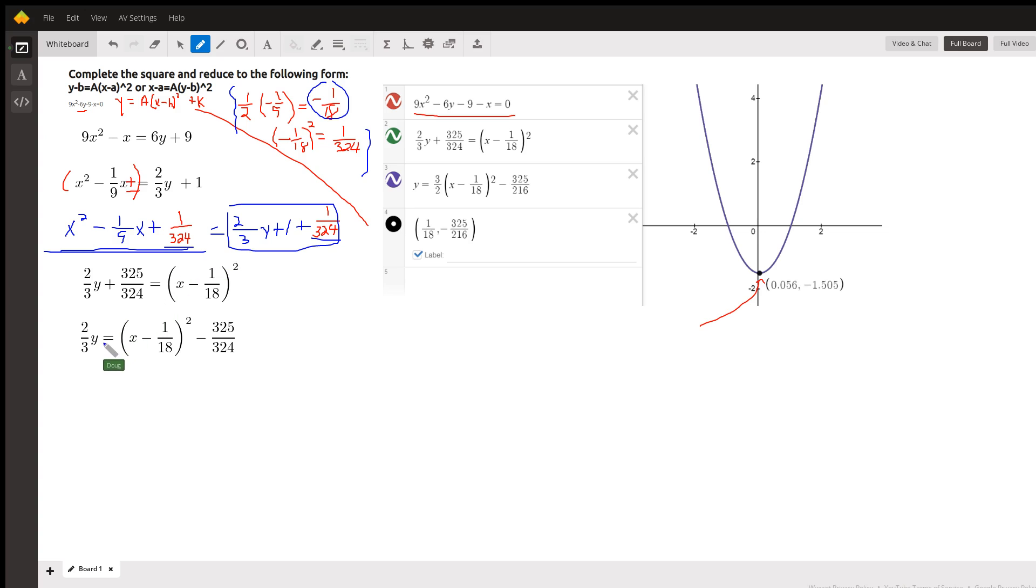Okay, and then finally, two more steps. Move this term to the other side by subtracting 325 324ths. And then finally, what we're going to do is multiply both sides by 3 halves, so that the number in front of y is equal to 1. So we'll get 3 halves times this binomial squared minus 3 halves times 325 324ths. And it happens to be 325 over 216th.